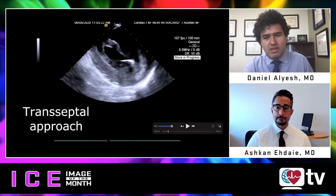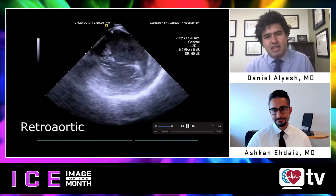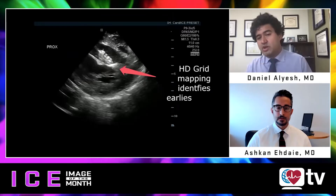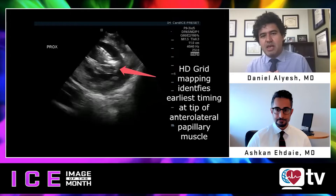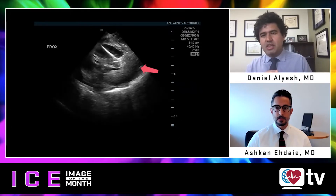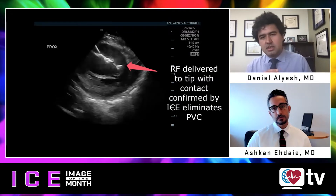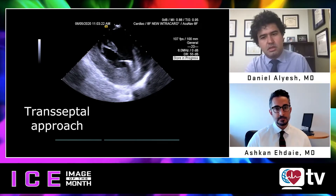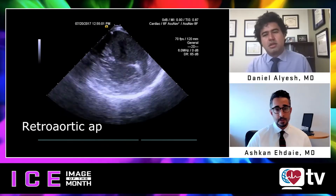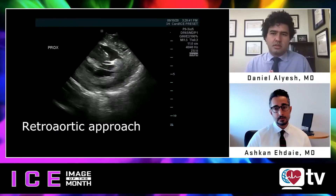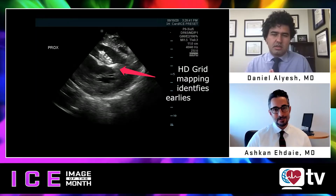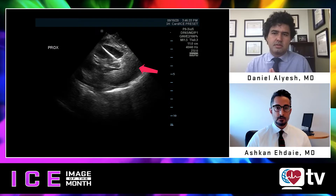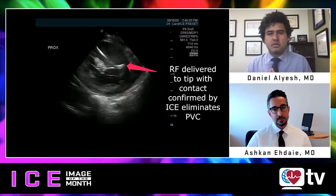The next few images show the transeptal approach, and then an example of anterolateral access from the retro-aortic approach coming from superior with a high-density mapping catheter. Do you use high-density mapping catheters for papillary PVCs? On occasion, but my focus is really on ablation catheter manipulation under ICE. Sometimes you think you have great contact with the mapping catheter but then you can't reach the same area with the ablation catheter, so I use the ablation catheter for mapping around this three-dimensional structure guided by ICE rather than breaking out the mapping catheter.